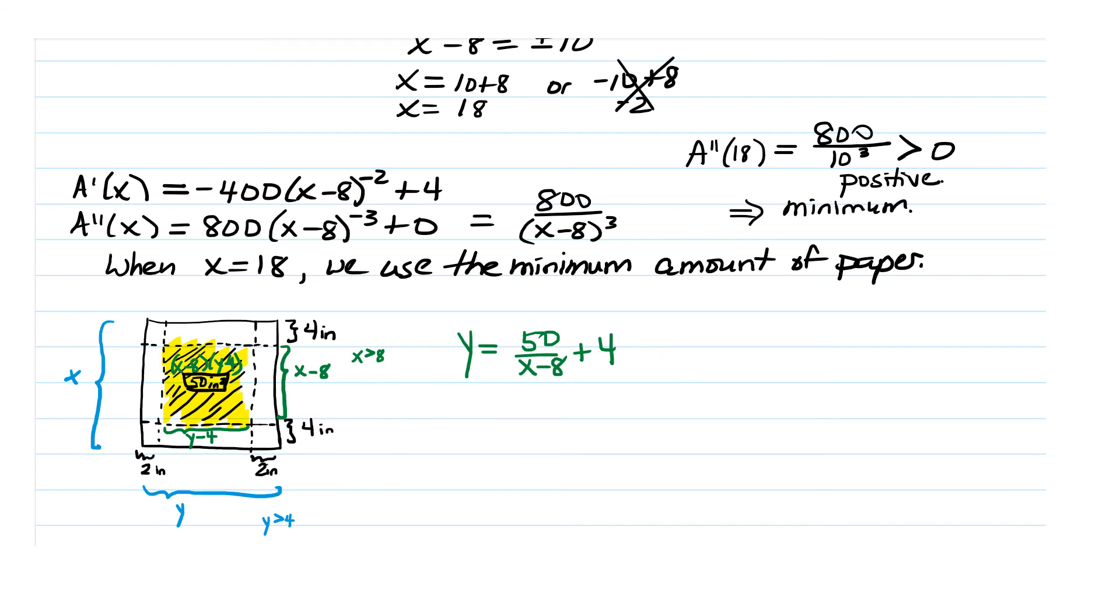Y is equal to 50 over X minus 8 plus 4. Y is equal to 50 over 18 minus 8 plus 4, which is going to be 50 over 10 is 5 plus 4 is 9. So we're talking about a piece of paper 18 inches by 9 inches to minimize the amount of paper used.